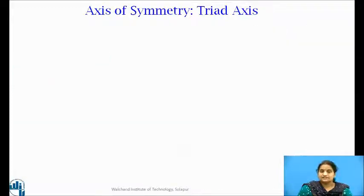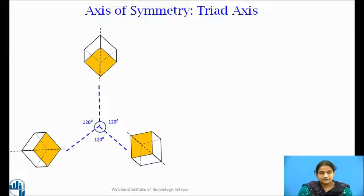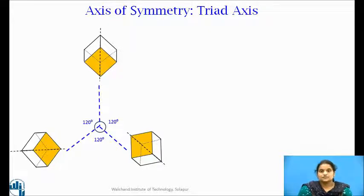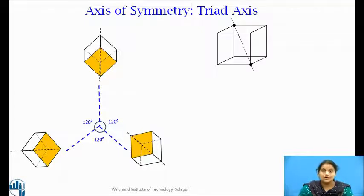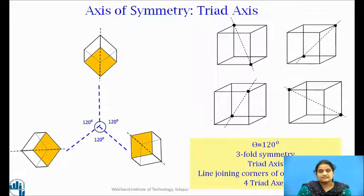For 3-fold symmetry, the crystal is rotated through 120 degrees. We can see the change in the position of the cube with each rotation of 120 degrees. By the third rotation of 120 degrees, the cube achieves the self-coincidence position. Hence, it is called 3-fold symmetry and the axis is known as the triad axis. A line joining the corner points of a pair of opposite parallel edges is the triad axis. As there are 4 diagonals in a cube, the number of triad axes is 4.